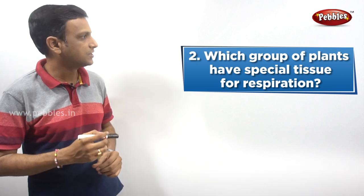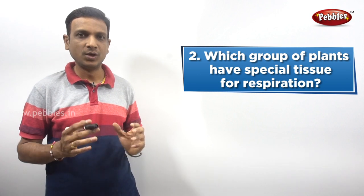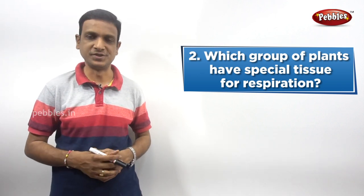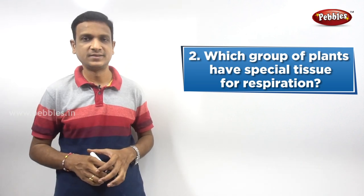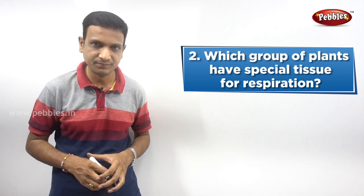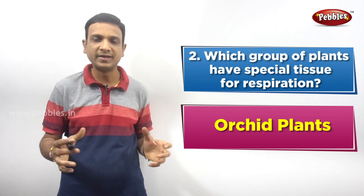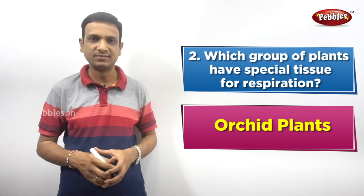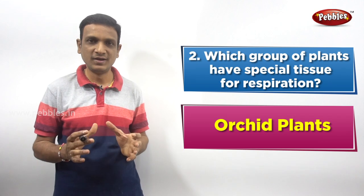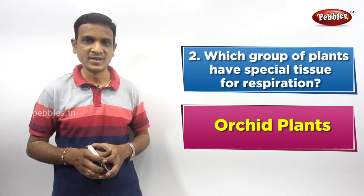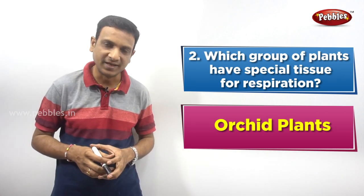Second question: which group of plants have special tissue for respiration? There is a group of plants which have special tissue for respiration. The answer is orchid plants. Orchids are mostly flowering ornamental plants with beautiful flowers. In these plants we find some specialized tissue for respiration.